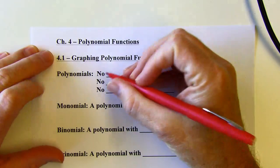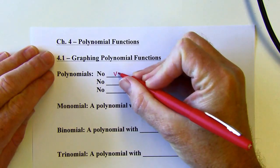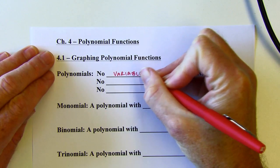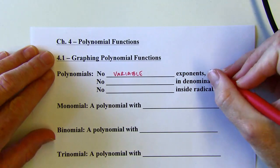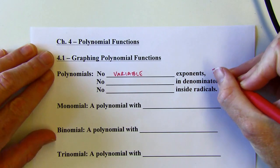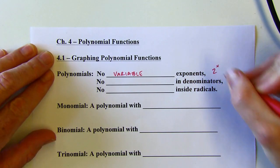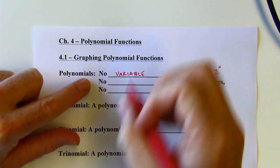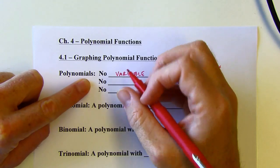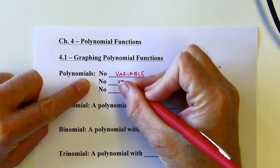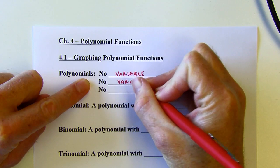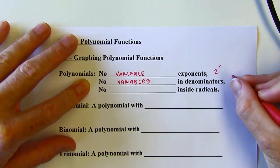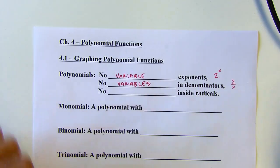You can't have variable exponents — no variable exponents. So if you see something like 2 to the x, that's not a polynomial. No variables in denominators. So 2 over x is not a polynomial.